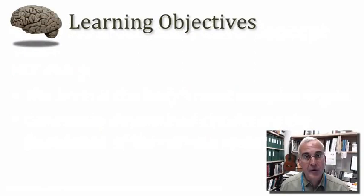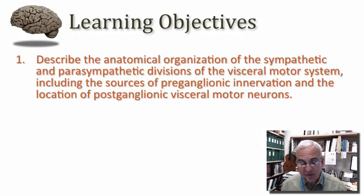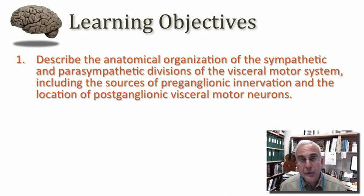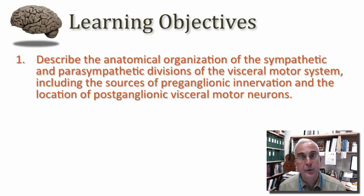In this first part of our tutorial on the visceral motor system, I have three learning objectives. First, I want you to be able to describe the anatomical organization of the sympathetic and parasympathetic divisions of the visceral motor system, including the sources of preganglionic innervation and the location of the postganglionic visceral motor neurons.